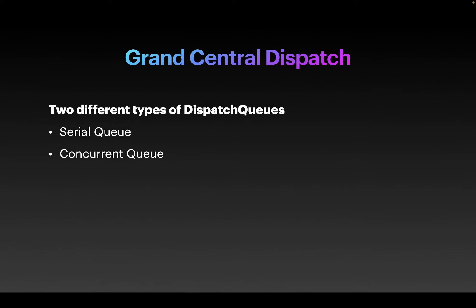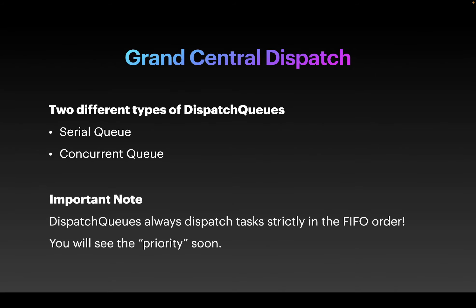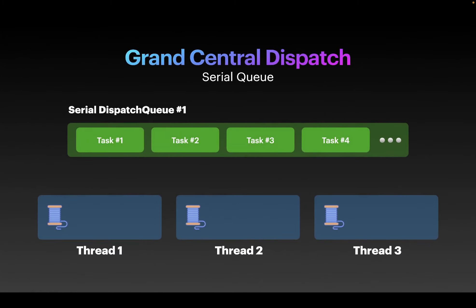There are two types of dispatch queues: serial queue and concurrent queue. All tasks inside a dispatch queue are dispatched strictly in FIFO order — you'll see this matter when it comes to prioritization. A serial queue serializes all processing, popping out one task at a time. It can only dispatch and perform one task at a time until that task — the function or closure — returns. Then it moves on to the next one.